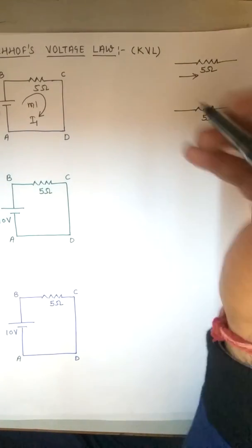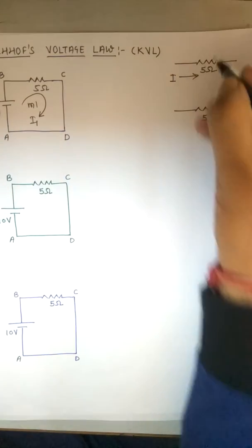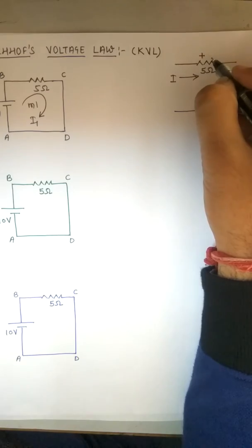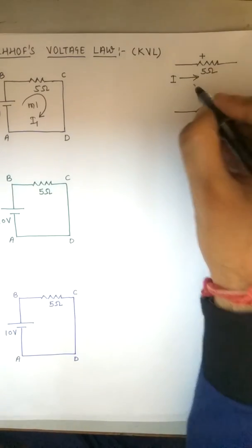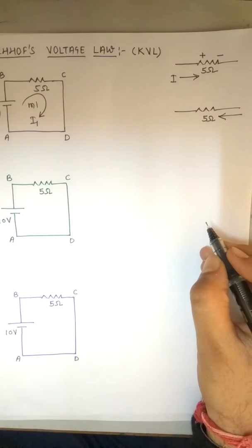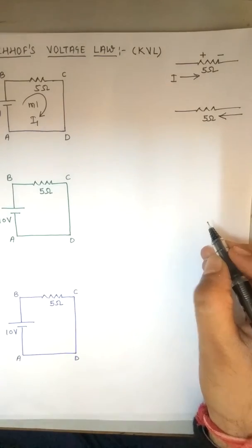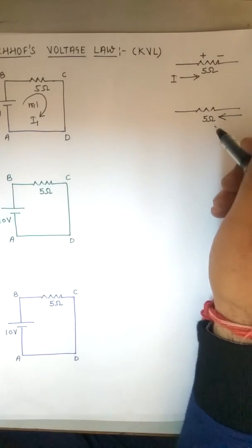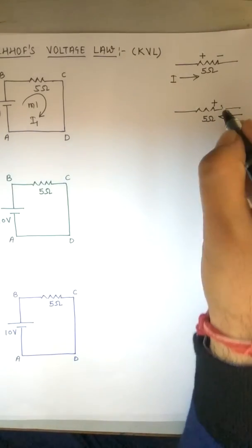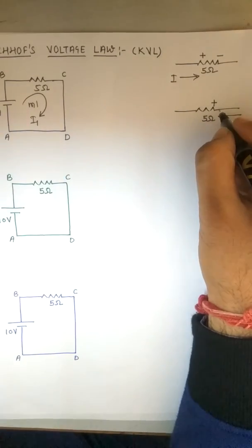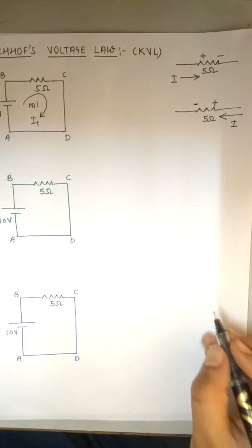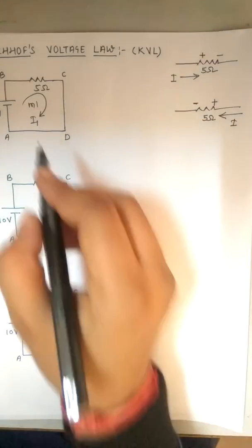Here we explain some terminology on how to solve this question. If there is a 5 ohm resistance and a current I is flowing from left to right, we place a plus sign at the terminal where the current is entering and a minus sign at the terminal where current is leaving. In the same resistance, if current is flowing from right to left, then the positive sign is at the entering point and the leaving terminal is minus.